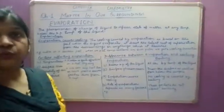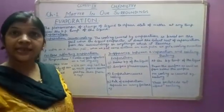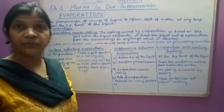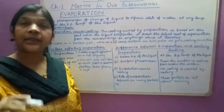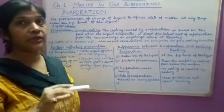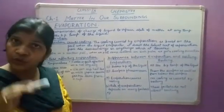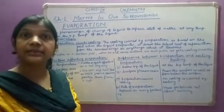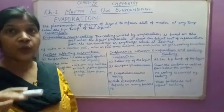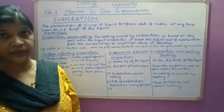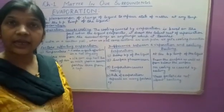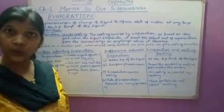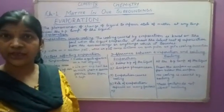The third factor is humidity of air. The amount of water vapors present in air is known as humidity. At a certain temperature, air can hold only a definite amount of water vapors. At low humidity, rate of evaporation is high and water evaporates rapidly. Similarly, at high humidity, rate of evaporation is low and water evaporates slowly.